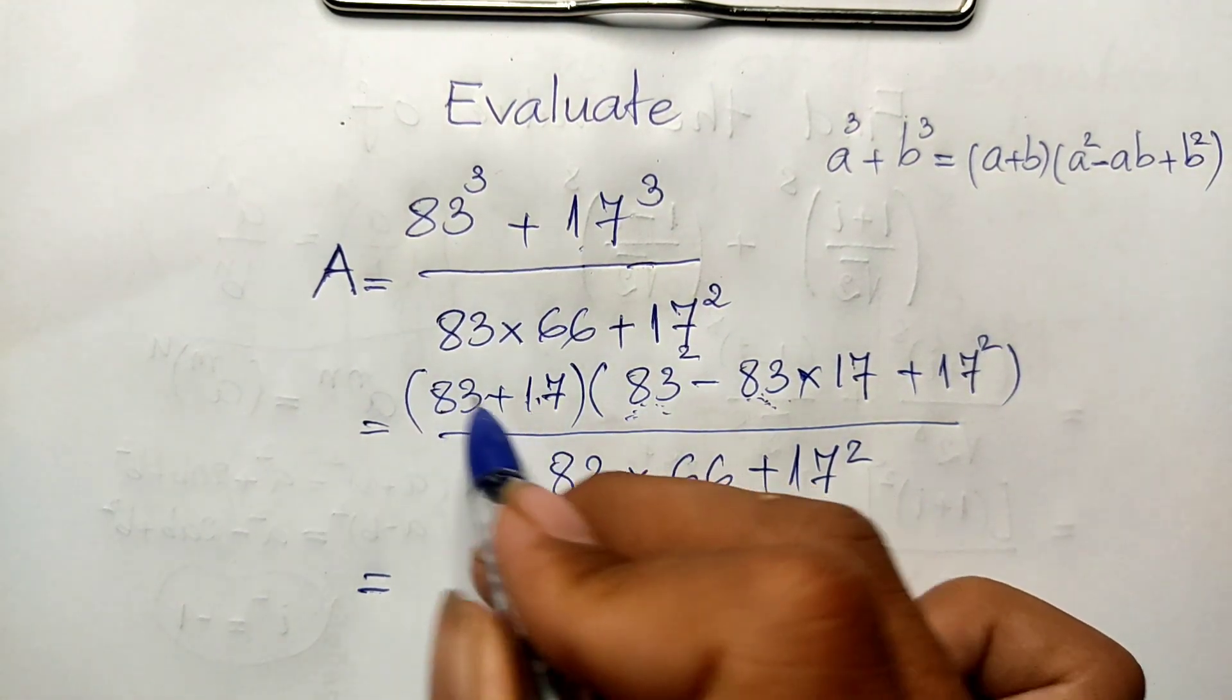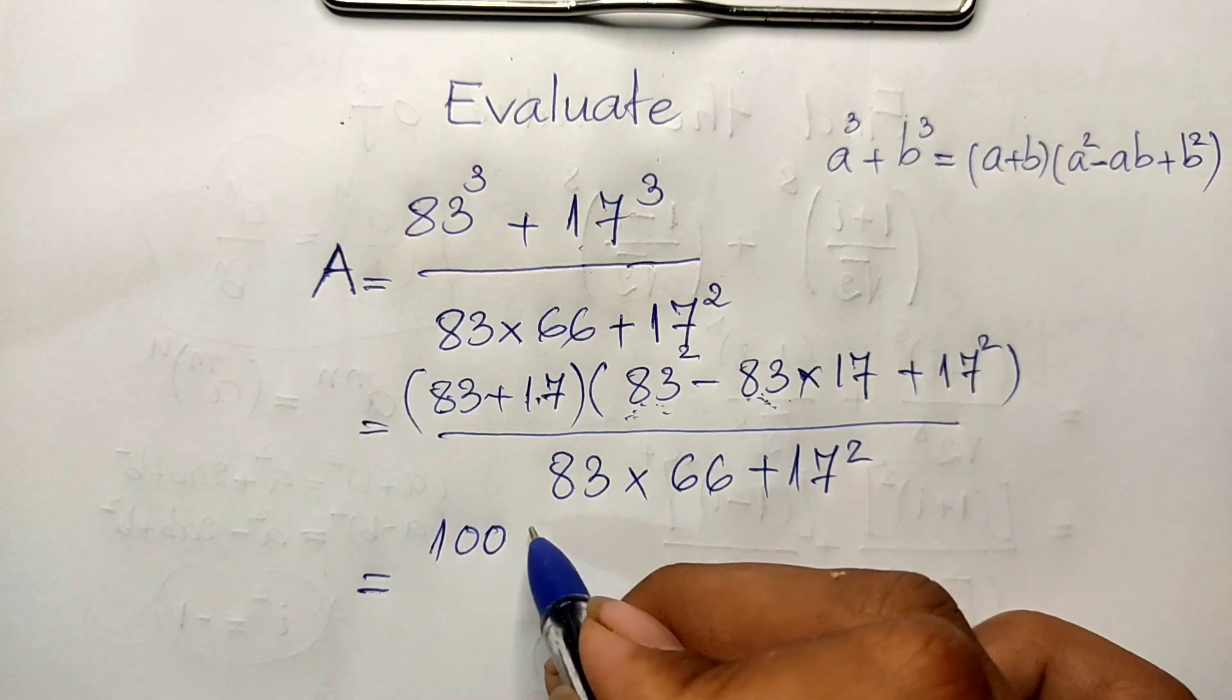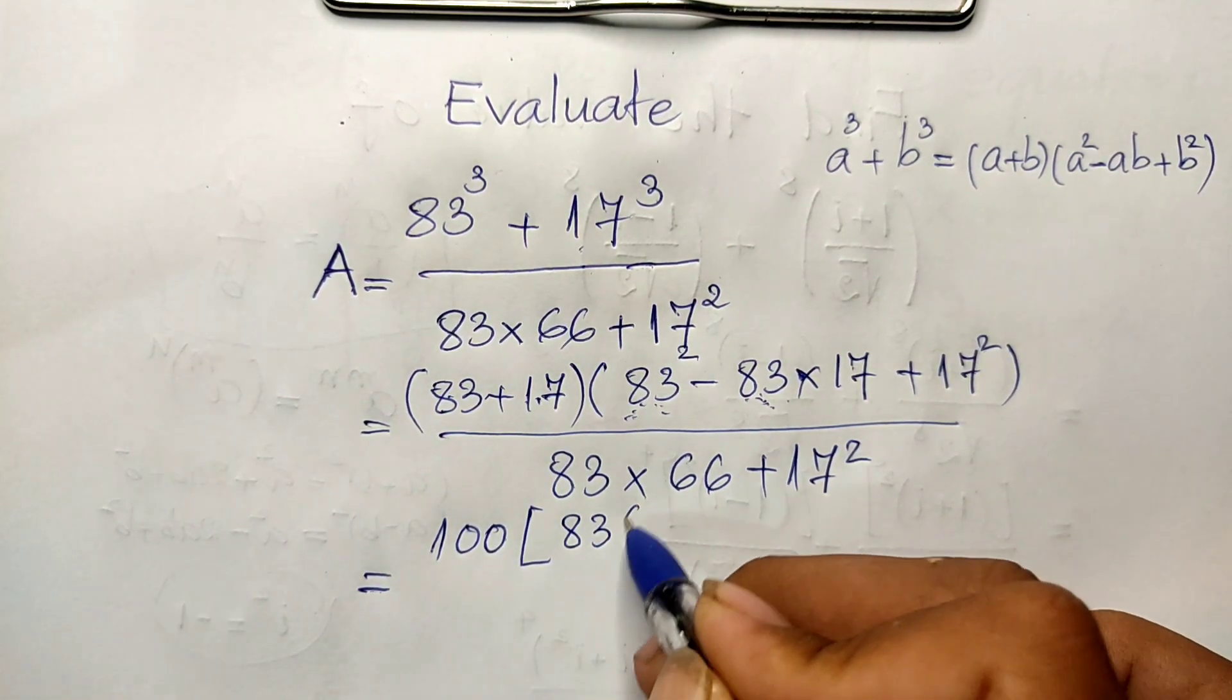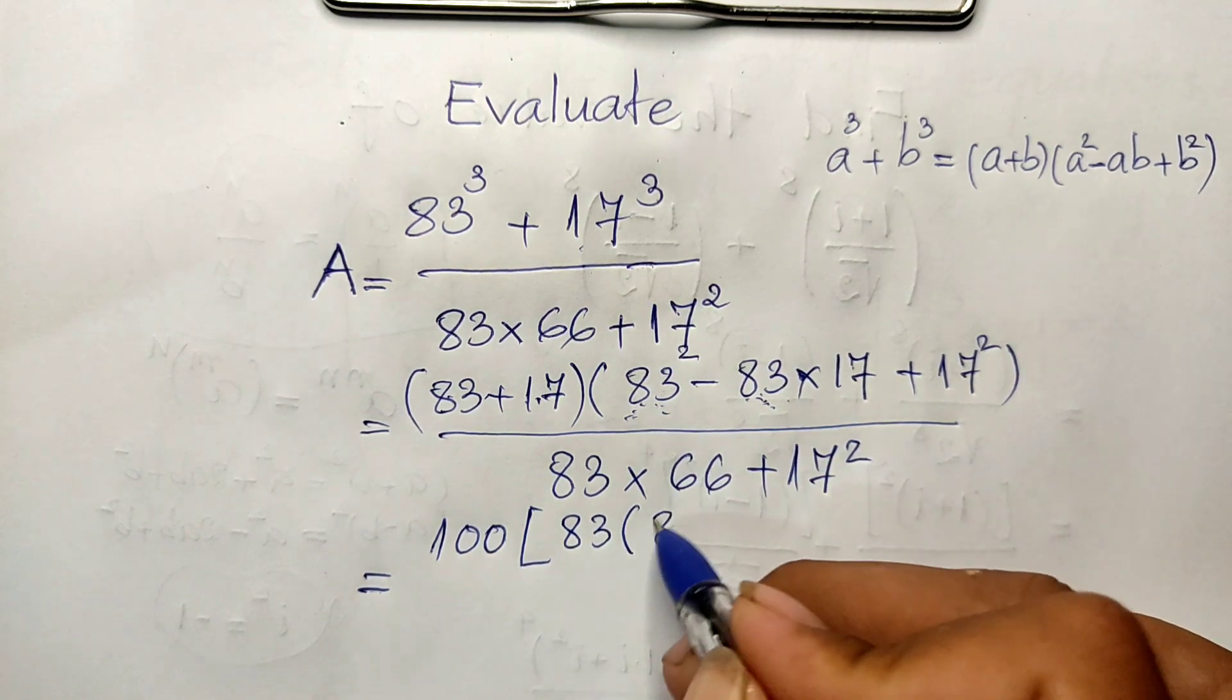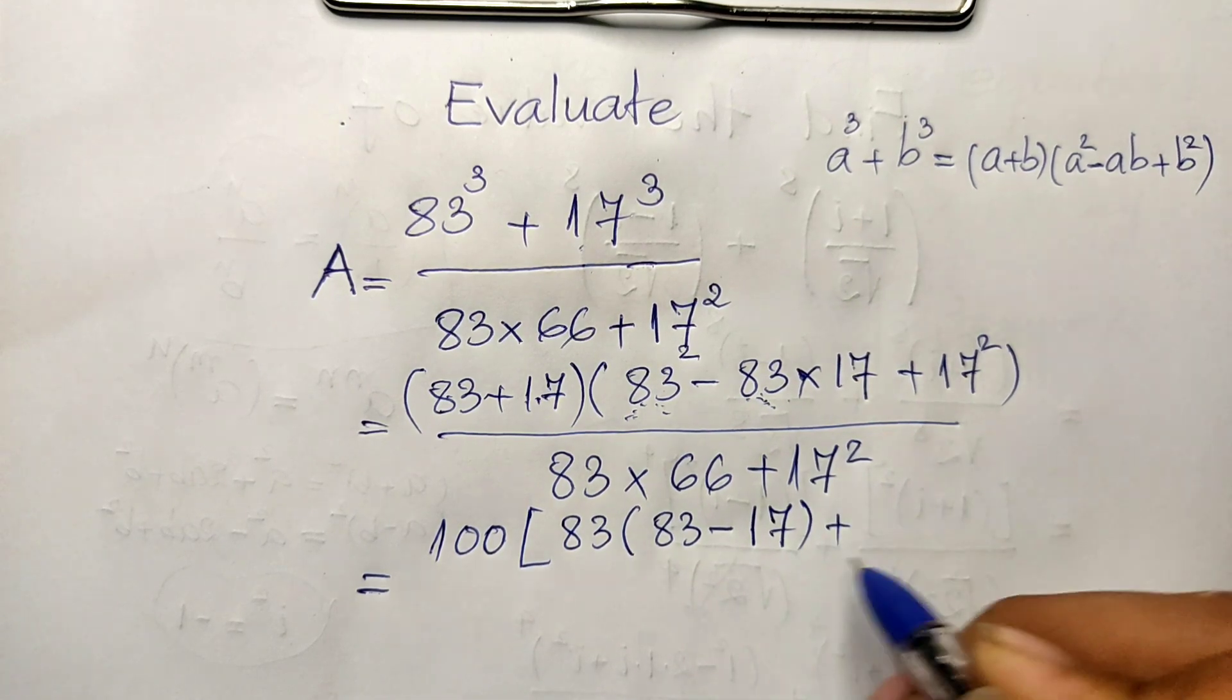This we get 100 multiplied by this. We get 83 squared minus 17... here we get 100 multiplied... We get 83 minus 17 plus 17 squared.